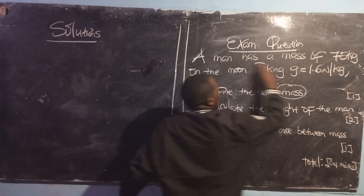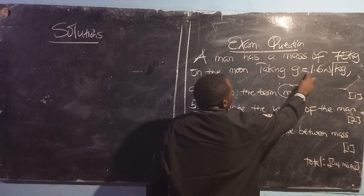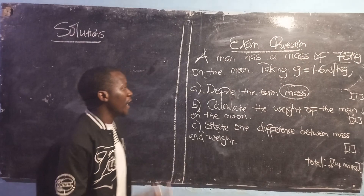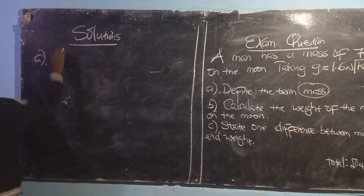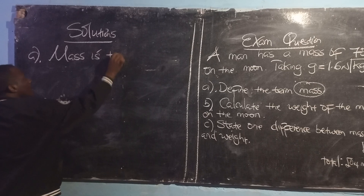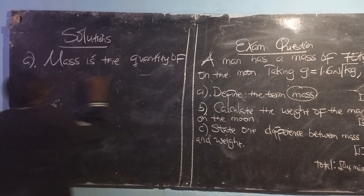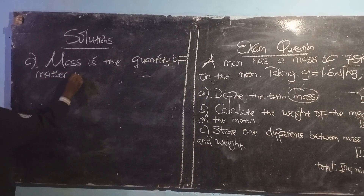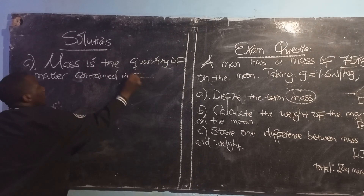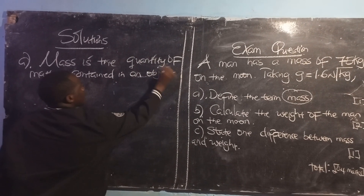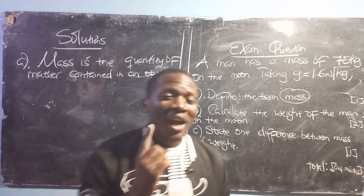A man has a mass of 75 kg on the moon, taking gravity to be 1.6 N per kg. For Part A, define the term mass. We are going to say: mass is the quantity of matter contained in an object.